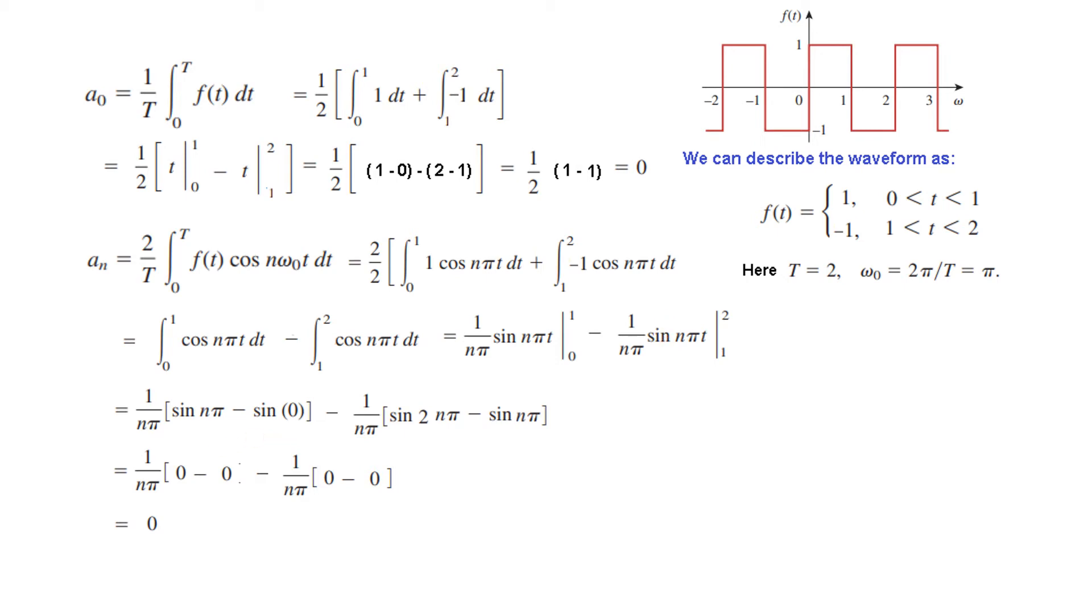And solving, solving, solving, solving. We get the answer is 0. Now remember here for omega not we have replaced it by pi. Because from here we saw that omega not is pi.